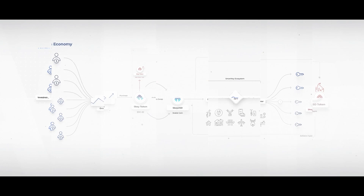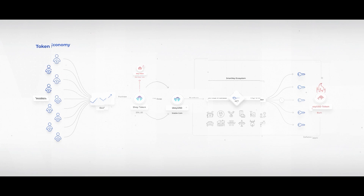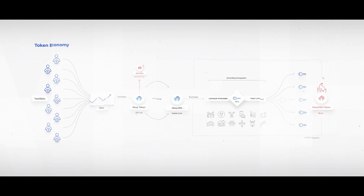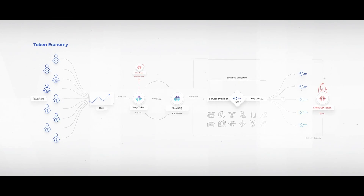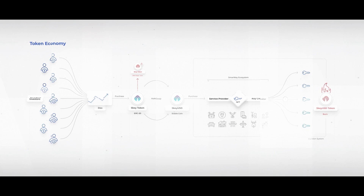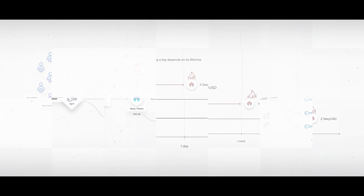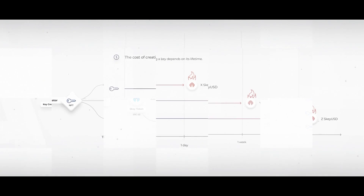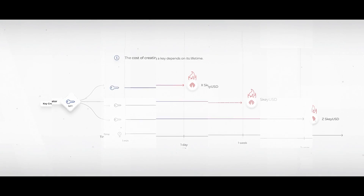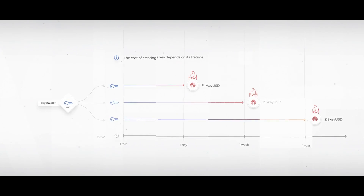So where does the SQUSD come from? In order to get SQUSD, service providers will have to buy them with SQERC20 tokens. One more important thing — SQUSD is a stablecoin, just like USDT.